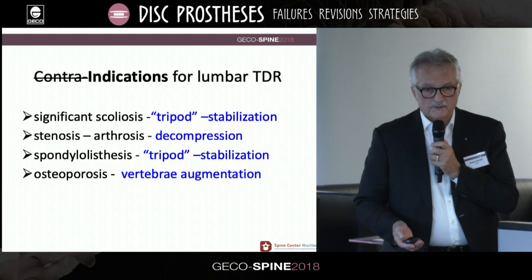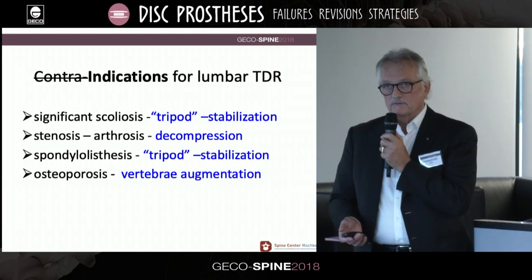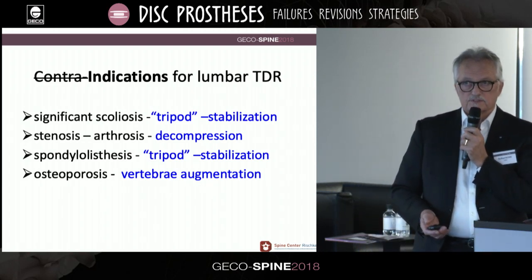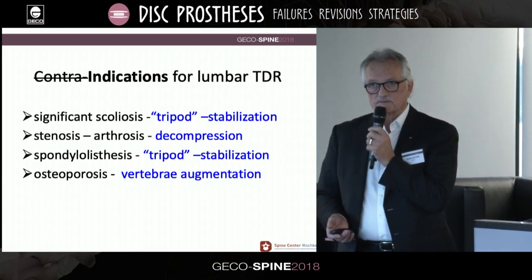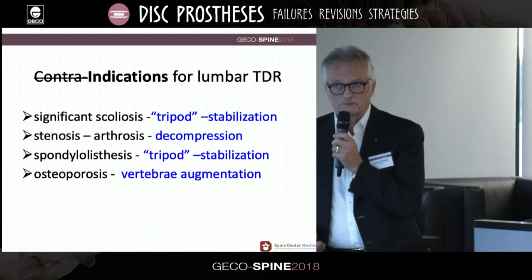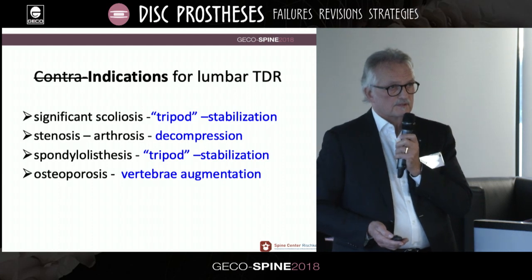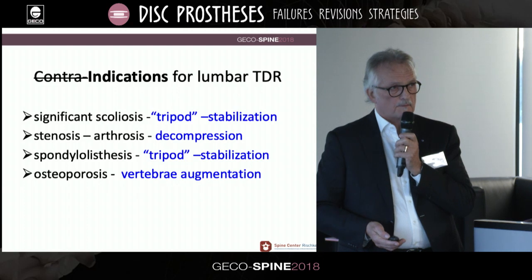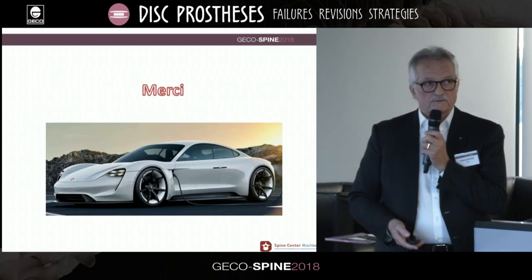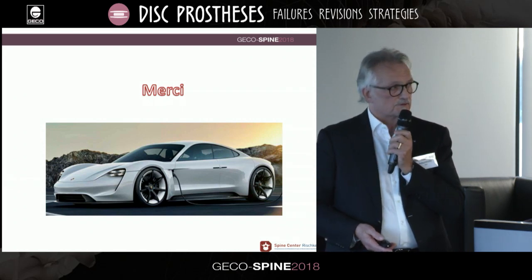So, that's my statement. From my point, this is not anymore a contraindication. If we observe the principles, significant scoliosis could be an indication if we use a tripod stabilization. If there is stenosis or arthrosis, we have to observe the decompression. In spondylolisthesis, also a tripod stabilization. In osteoporosis, we have to use vertebral augmentation, where I prefer calcium phosphate bone cement as a natural substance, because if it extravasates into the vessels, it can be resorbed by the fluid. That's my statement. I thank you very much for your attention. I thank you also for our host in this place here.